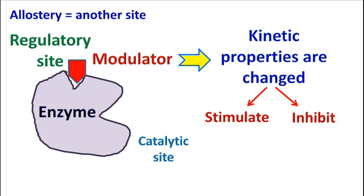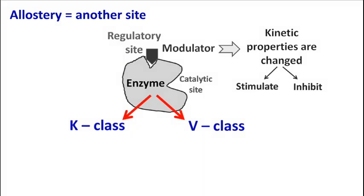The modulator may inhibit or stimulate the enzyme activity. The allosteric enzymes are classified into two types: K-class and V-class.